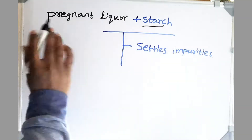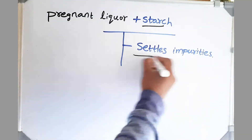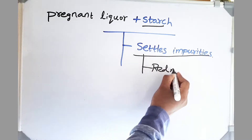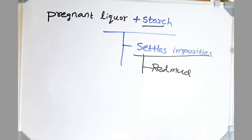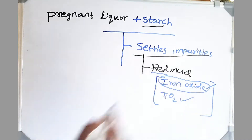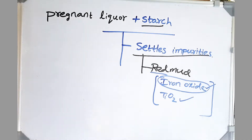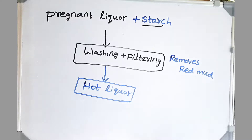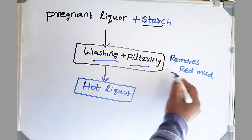Now we add starch to our pregnant liquor, which settles all the impurities. We call these impurities red mud. Red mud has been the biggest problem of our alumina industries. Red mud consists mainly of iron oxide and titanium oxide. The name 'red' is because of the color induced by the iron oxide. There are no effective industries which can use red mud for other purposes. Only a small percentage of red mud is used in paint and ceramic industries. The rest is stored in huge fields, waiting for someone to find an application.